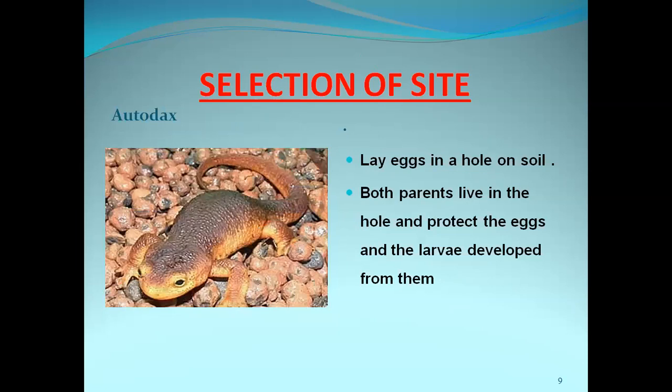Another example is Orthydon, which also lays eggs in a hole in the soil. This hole will be protected by both parents — both mother and father will protect the eggs laid in the hole until the larvae develop from them.